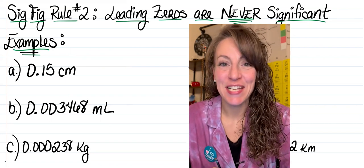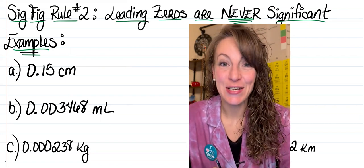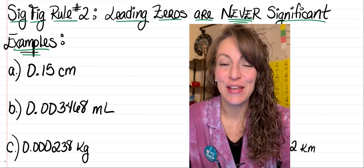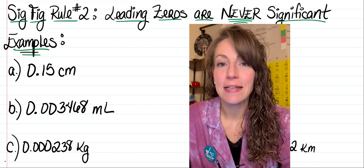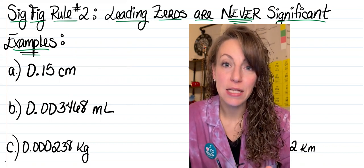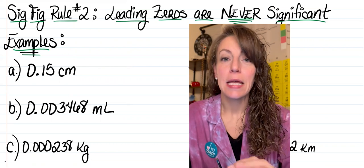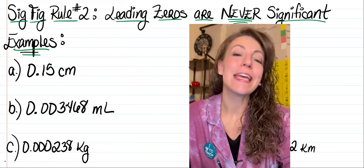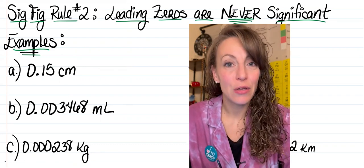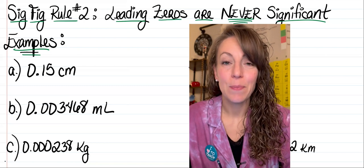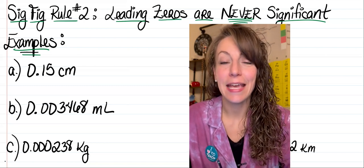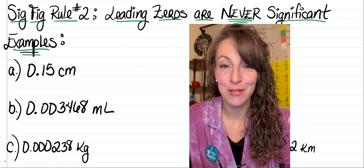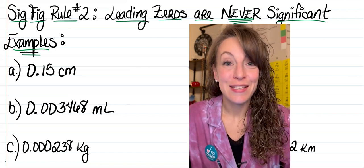Welcome, let's do some chemistry. In this video I'd like to talk about the significant figure rule pertaining to leading zeros. Leading zeros are defined as zeros in front of non-zero digits in a measurement. Since these zeros simply hold a decimal place in the particular measured value, they'll never be significant because they never indicate the precision of the measuring device used to take that measurement. So let's get started.